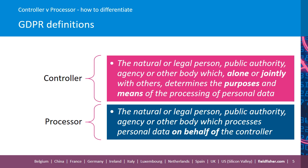If you first look at the top box, which is in pink, the definition for a controller is the natural or legal person, public authority, agency or other body, which alone or jointly with others, determines the purposes and means of the processing of personal data. And if you take a look at the box underneath in blue, we have the definition for processor. The processor is the body that processes personal data on behalf of the controller. So they're not determining the purpose and means of processing — the controller is — and the processor is doing something with the data on behalf of the controller.